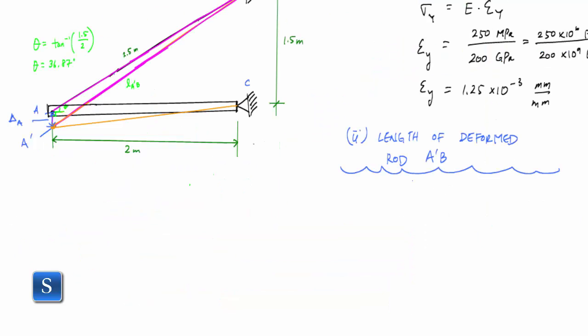And here this would just be from the definition of normal strain. I would have epsilon Y is the change in length delta L over the original length. And in this case right here, the change in length delta L is equal to the original length L0 times the yield strain in this case.